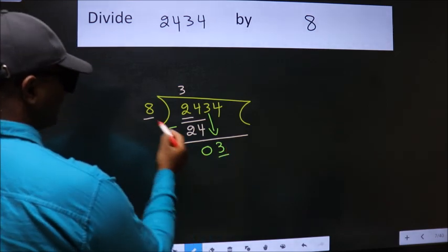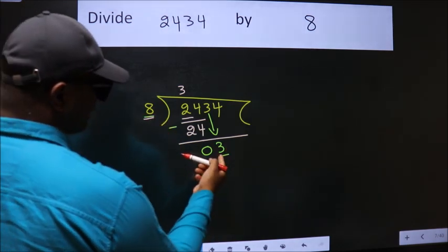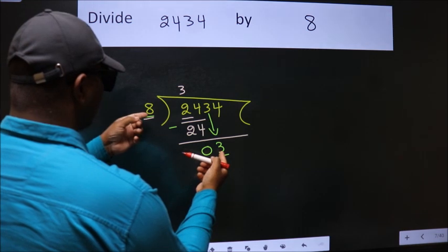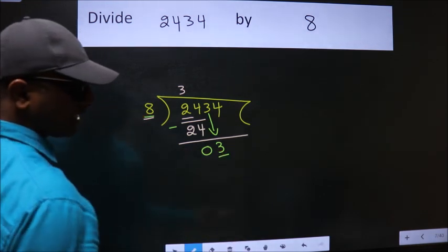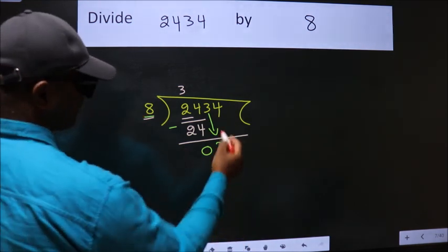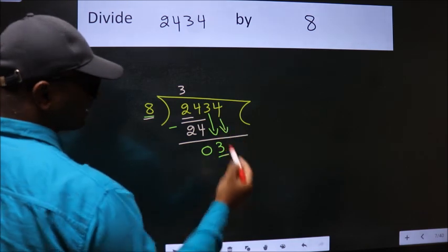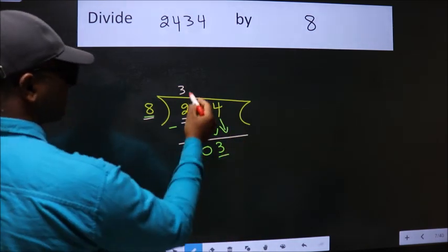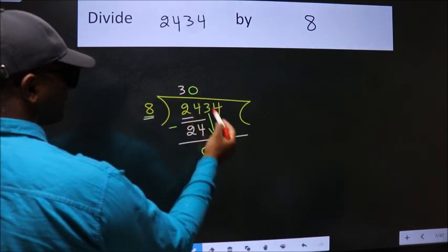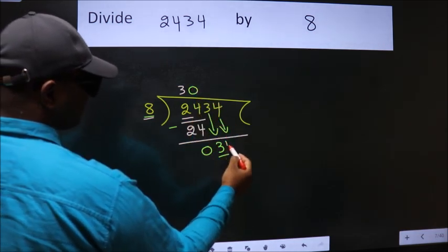Here we have 3. Here 8. 3 is smaller than 8. So, we should bring down the second number. And the rule to bring down second number is put 0 here. Then only we can bring down this number.